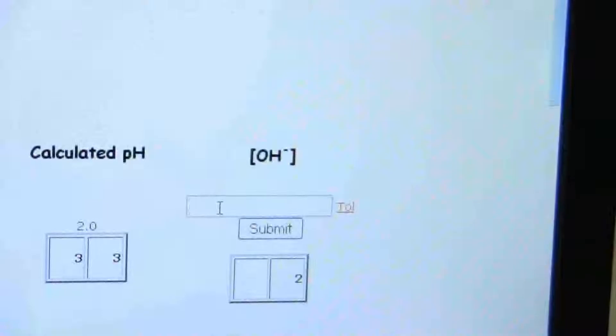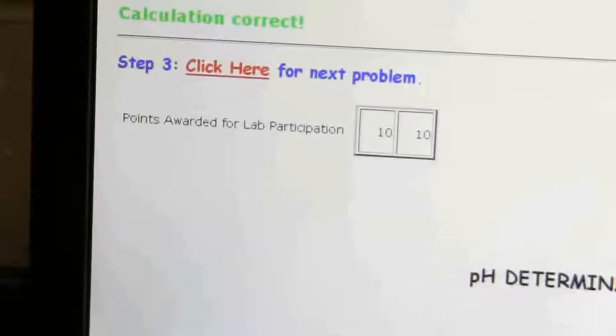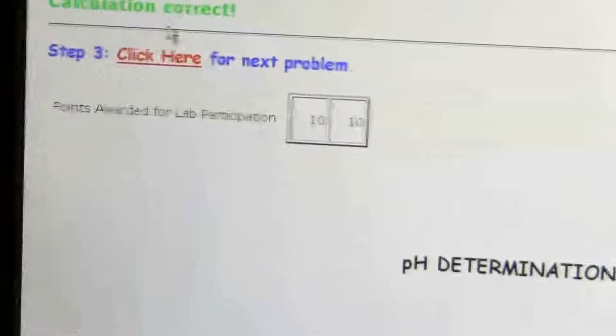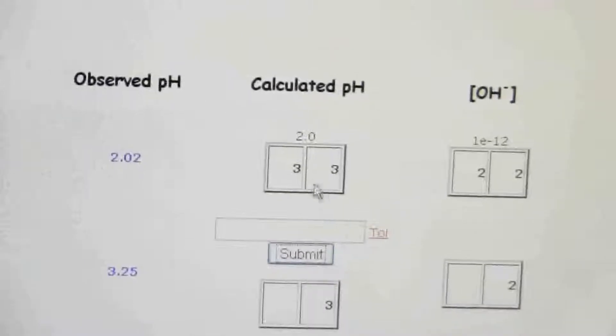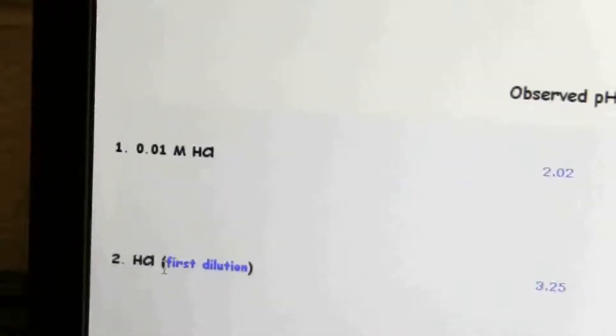Alright, so let's see how that goes in here. Do 1 e to the minus 12, and the e doesn't have to be capitalized. It'll work either way. Click submit, and then calculation correct. So then you click for the next problem, or you can just scroll down to where it is. You notice it has given me points for those, and now it's asking what is the calculated pH for my first dilution.